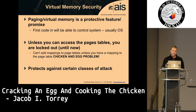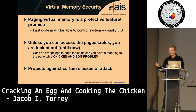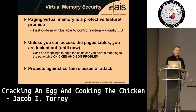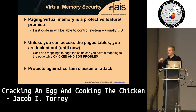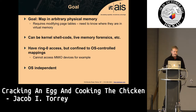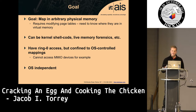Why do we care? Virtual memory is a protective feature — a promise of the platform. Once an OS controls these page tables, it has control over the platform. Unless you can access the page tables, you're locked out; you can't add mappings because you don't know where they are in memory unless you're the OS. This is the chicken-and-egg problem. Our goal is to map arbitrary physical memory, which requires modifying the page tables, which requires knowing where they are in virtual memory — whether for kernel shellcode, live memory forensics, etc.